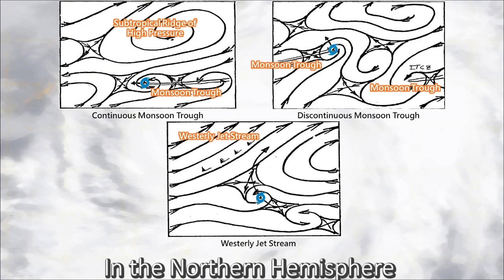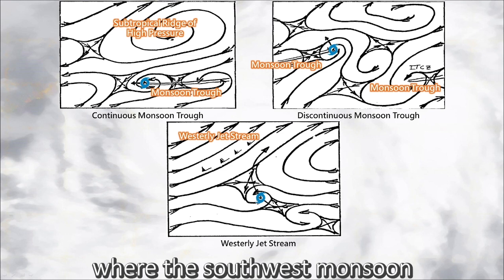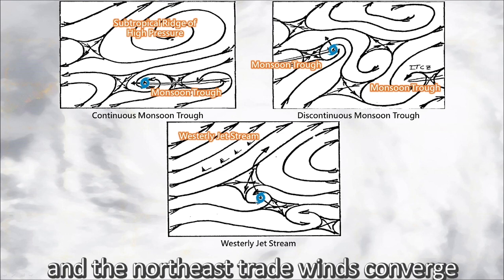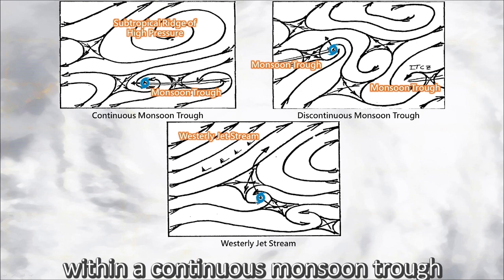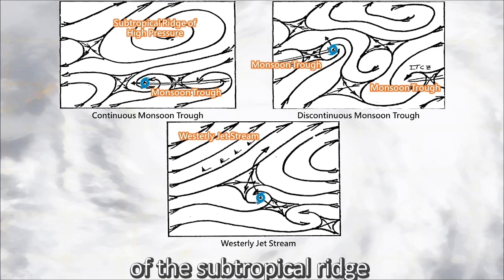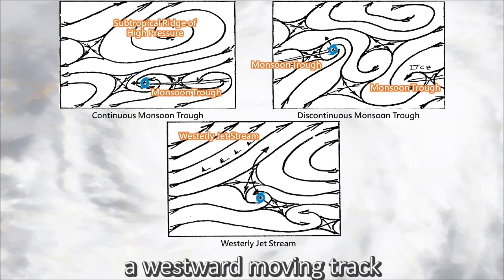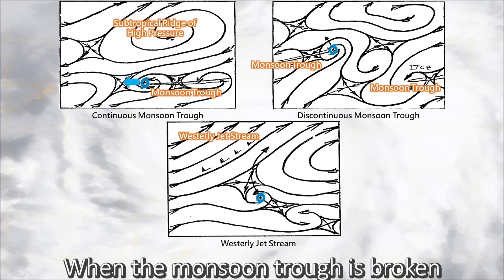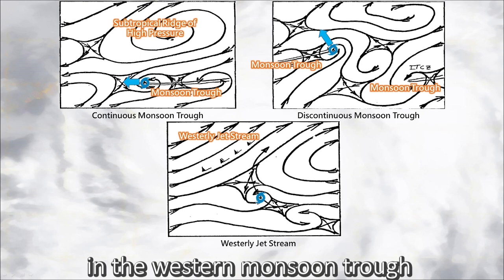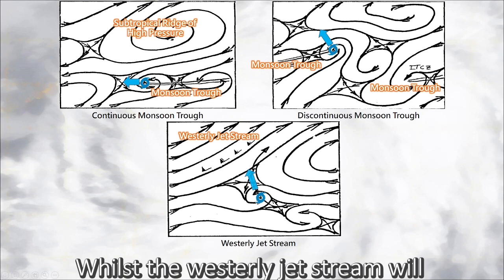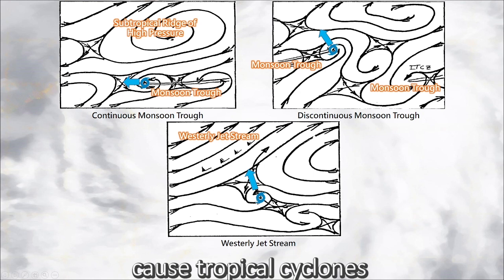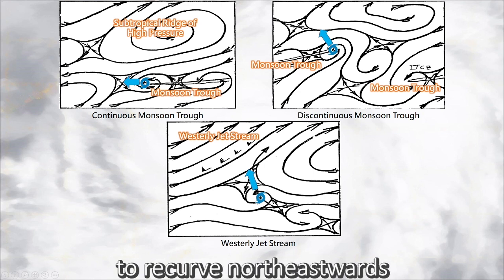In the Northern Hemisphere, the monsoon trough is where the southwest monsoon and the northeast trade winds converge. When tropical cyclones are located within a continuous monsoon trough at the southern periphery of the subtropical ridge, they will normally maintain a westward moving track. When the monsoon trough is broken, tropical cyclones located in the western monsoon trough will normally move northwestwards, whilst the westerly jet stream will cause tropical cyclones to recurve northeastwards.